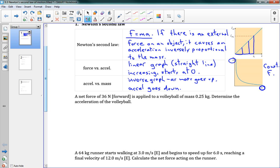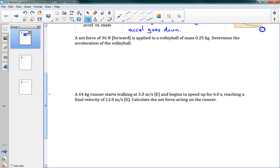We're going to work with this equation a bit. F equals ma. Here we have a net force of 36 newtons forward applied to a volleyball of mass .25 kilograms. We want the acceleration. F equals ma. And before we go any further, I want to make sure that we're clear here. We're talking about the net force here. So we apply a net force on an object that's equal to its acceleration times the mass.